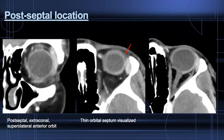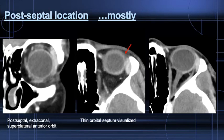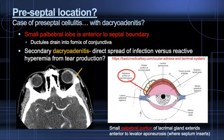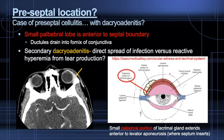Location of the lacrimal gland appears post-septal and extraconal. On the middle image, the gland appears posterior to a thin, visualized septum. But tears aren't secreted into the post-septal space, so finer inspection of anatomy is required. In fact, there's a small palpebral lobe of the gland that extends anterior to the levator aponeurosis and tarsal plate in the pre-septal space. So the lacrimal gland is both a pre-septal and post-septal structure, but mostly the latter.